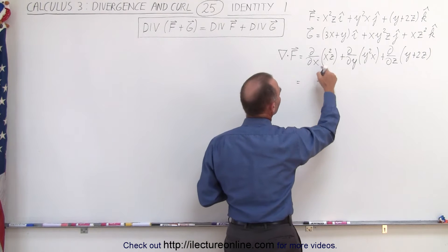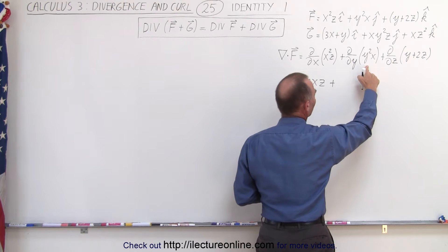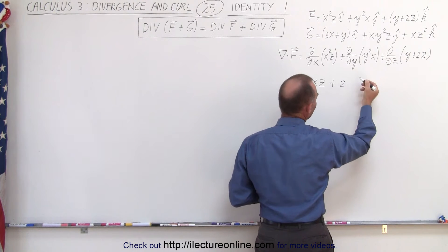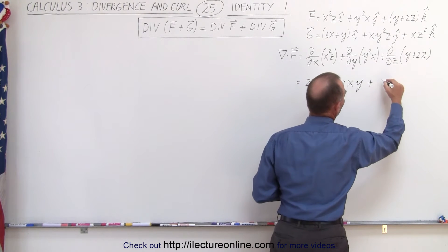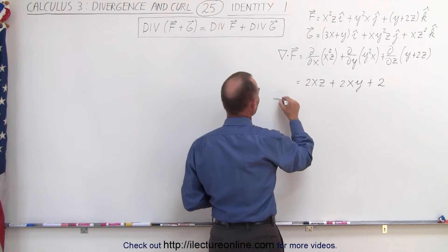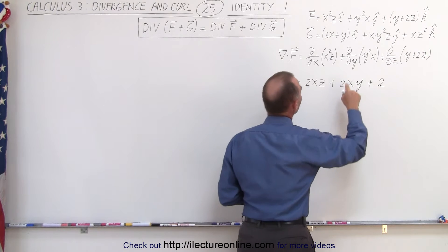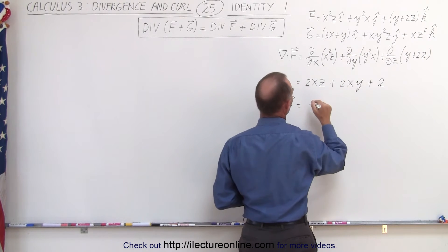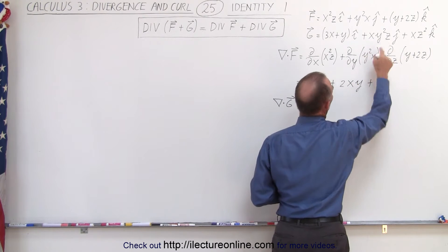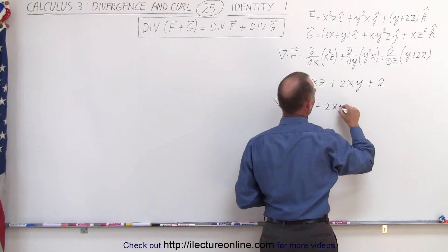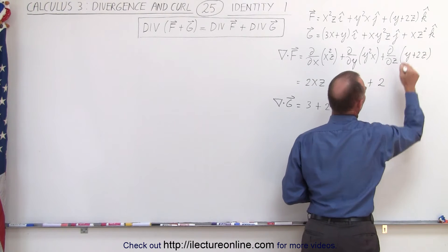So this is equal to: that would be 2xz, plus the partial derivative with respect to y here would be 2xy. We'll put the x first, and then here the partial derivative with respect to z is simply going to be 2. Now we do the same for the partial derivative of the second vector field g, so we take the partial derivative of this with respect to x which will give us 3, plus the partial derivative of this with respect to y that will give us 2xyz, and the partial derivative of this with respect to z which will give us 2xz.